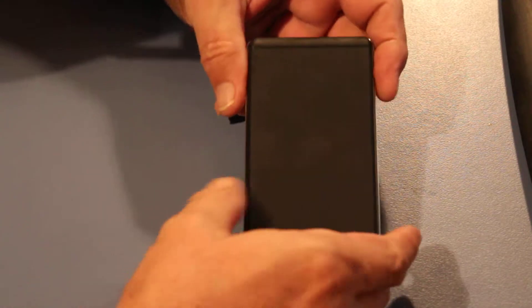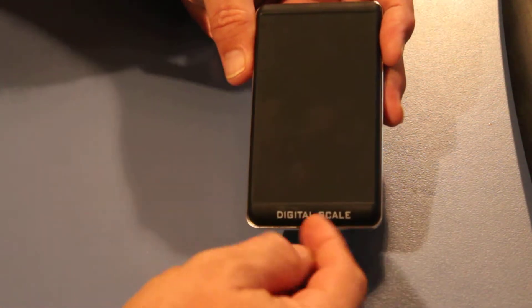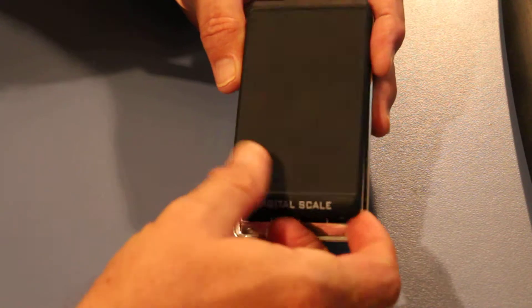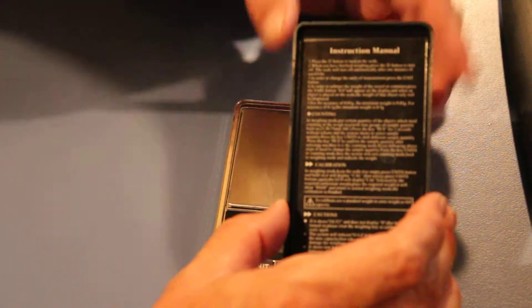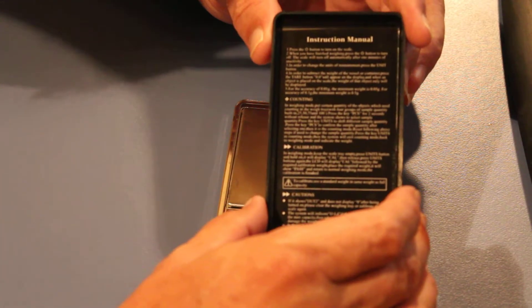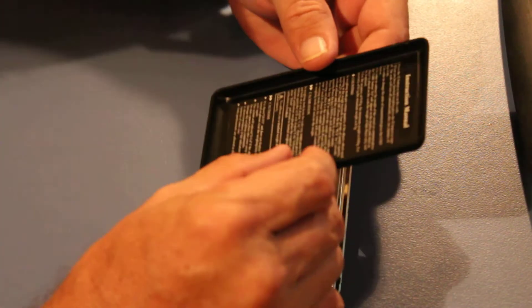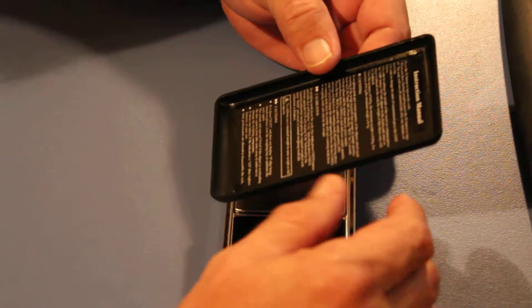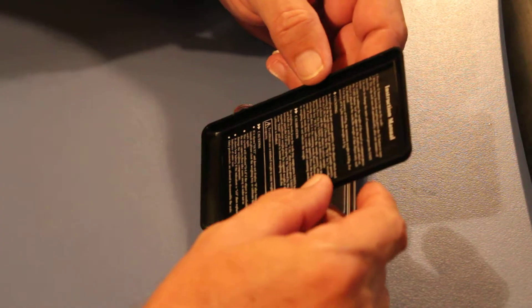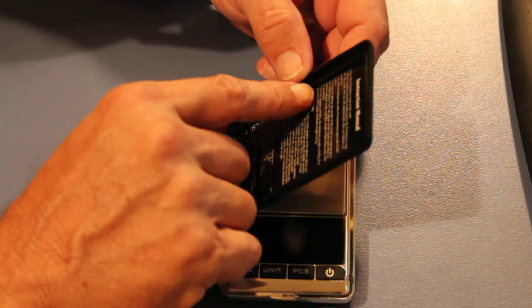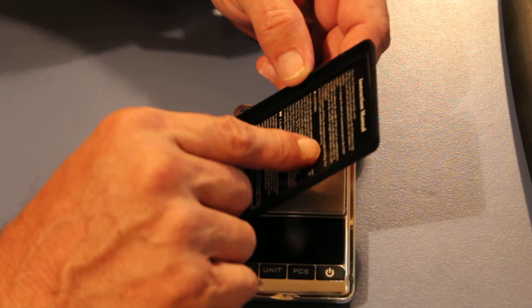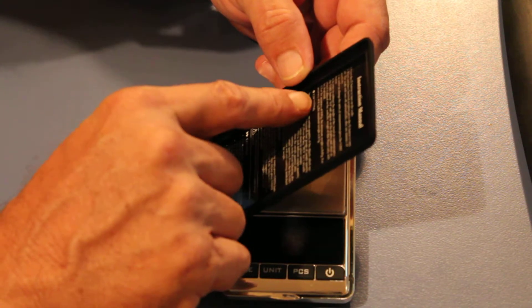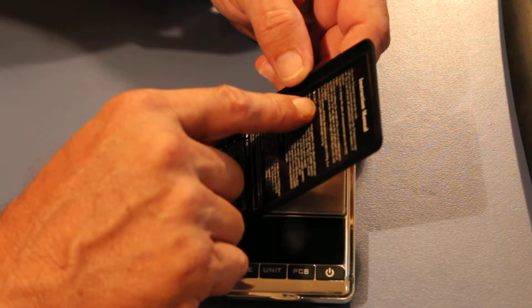The batteries are okay. And the lid here where it says digital scale pops off and has some of the instructions on the inside there. Most notably, which it doesn't say in the paper pamphlet instructions...